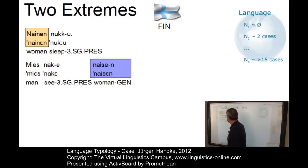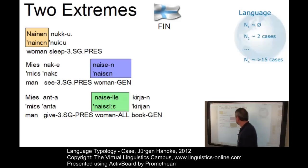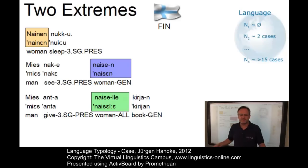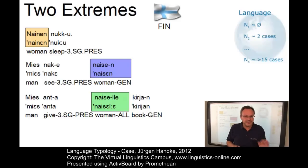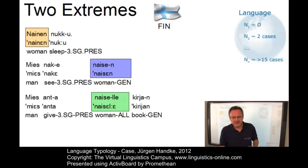Our second example: Mies näkee naisen — the man sees the woman. And example number three: Mies antaa naiselle kirjan — the man gives the woman the book. In each example we have a morphologically different form of the Finnish equivalent of 'woman': Nainen in the nominative case, marked as a subject; Naisen in the genitive case, marked as an object; Naiselle in the allative case, meaning something like 'to the woman'. In summary, a very complex case system.